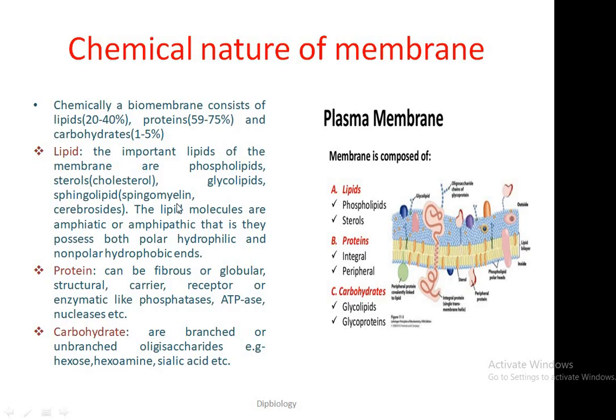The important lipids of the membrane are phospholipids, sterols, cholesterol, glycolipids, and sphingolipids — for example, sphingomyelin and cerebrosides. The lipid molecules are amphipathic, meaning they possess both polar hydrophilic and non-polar hydrophobic ends. The hydrophilic region is in the form of a head, while the hydrophobic part contains two fatty acid tails. The hydrophobic tails usually occur towards the center of the membrane.